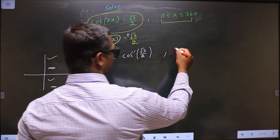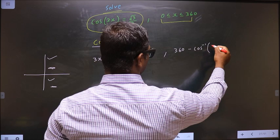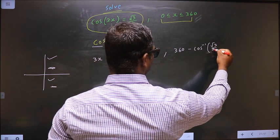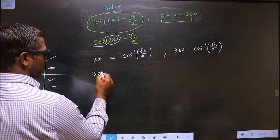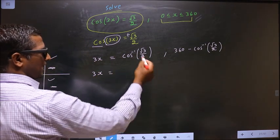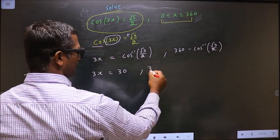we should do 360 minus cos inverse root 3 by 2. Now 3x equal to, calculate this, you get 30. Calculate this, you get 330.